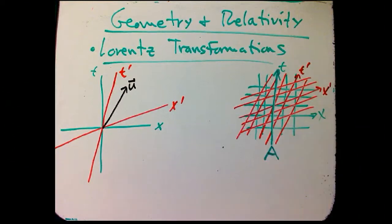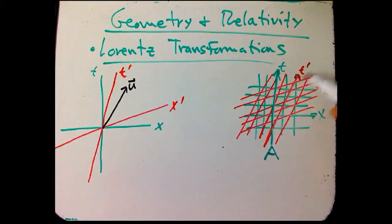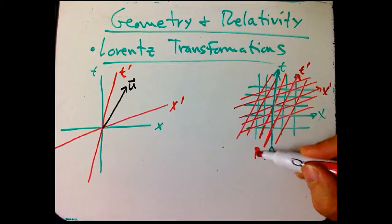This is his world line. And then we have another coordinate system, the red grid, corresponding to another observer. Let's say her coordinate system is X prime, T prime, and maybe she's observer B.